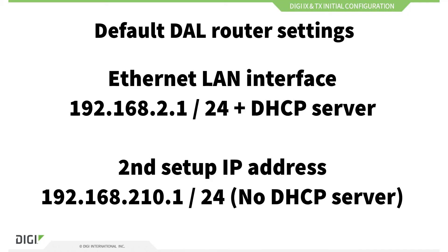The default settings on a DAL router are: the LAN interface has an IP address of 192.168.2.1/24 and there's a DHCP server running on this interface. There's also another IP address configured which is 192.168.2.10.1/24, but there's no DHCP server running for this network address, so if you want to connect to that one you'll need to set a static IP address within the same range on your PC.